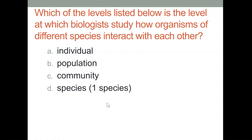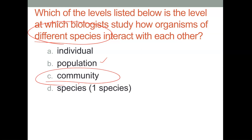Let's do a quick review. Which of the levels listed below is the level at which biologists study how organisms of different species interact with each other? A population is all the rabbits, for example, in Florida Canyon — all members of the same species within a geographic area that can interbreed and interact. But this question asks how organisms of different species interact. For example, what kinds of grass do the rabbits eat, what animals prey on them? This would be at the level of community — the community of different populations that live and interact with one another in Florida Canyon.